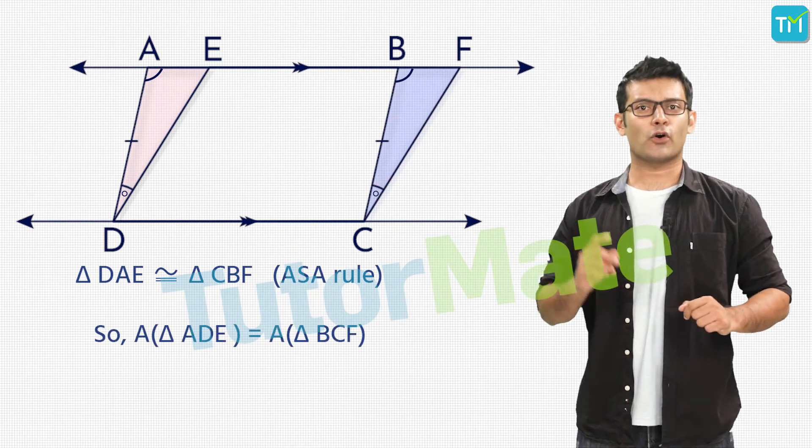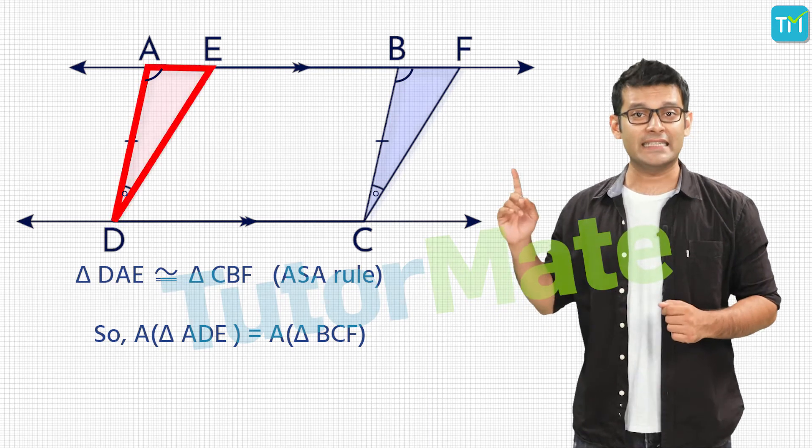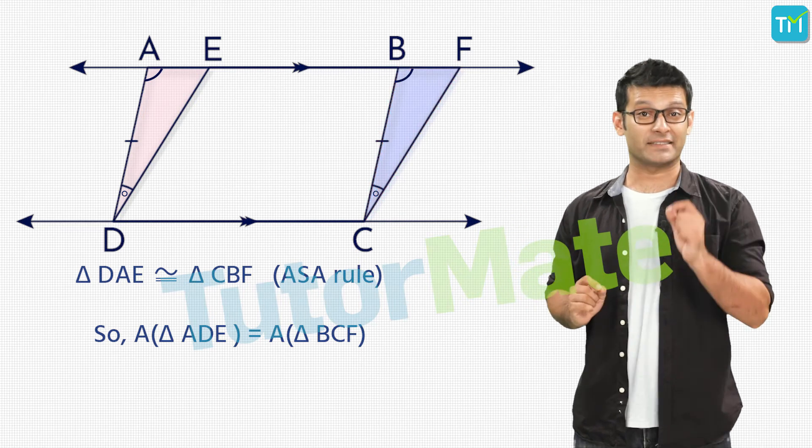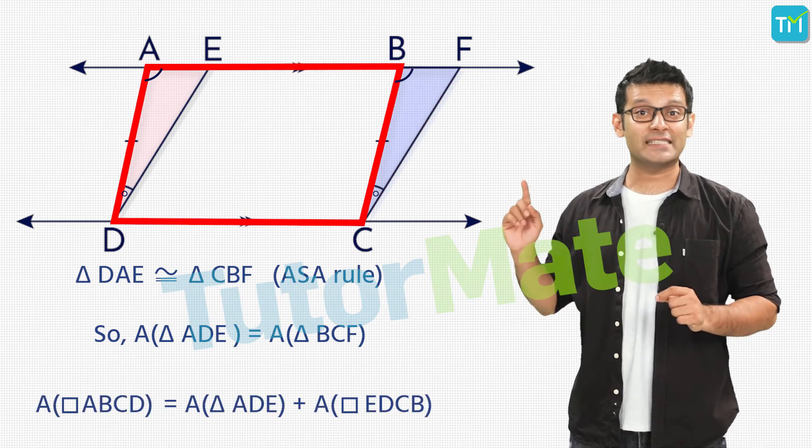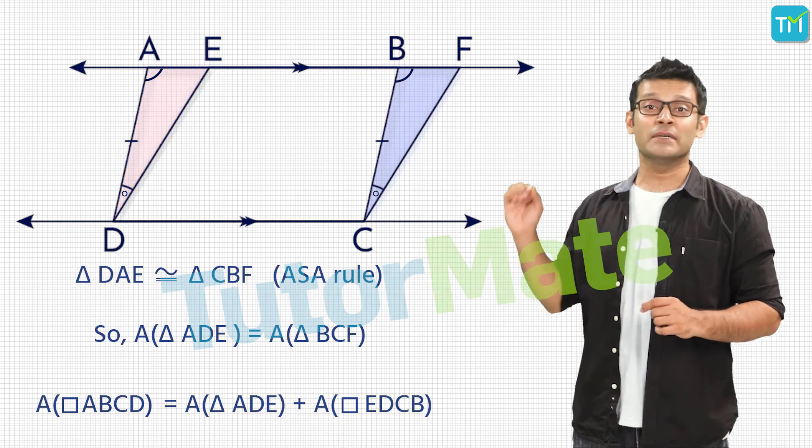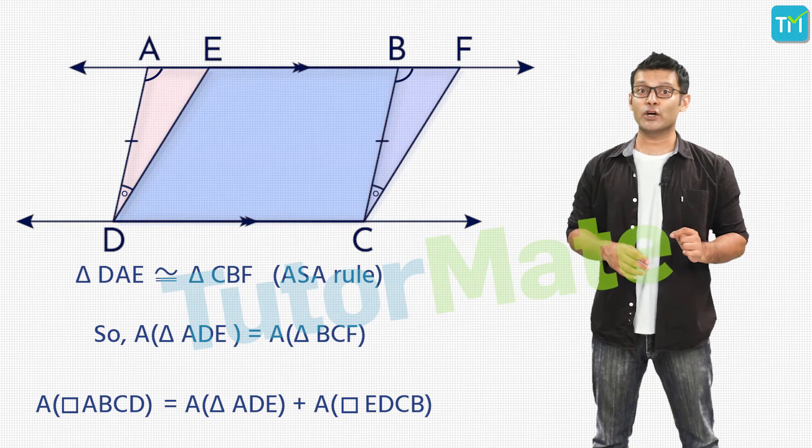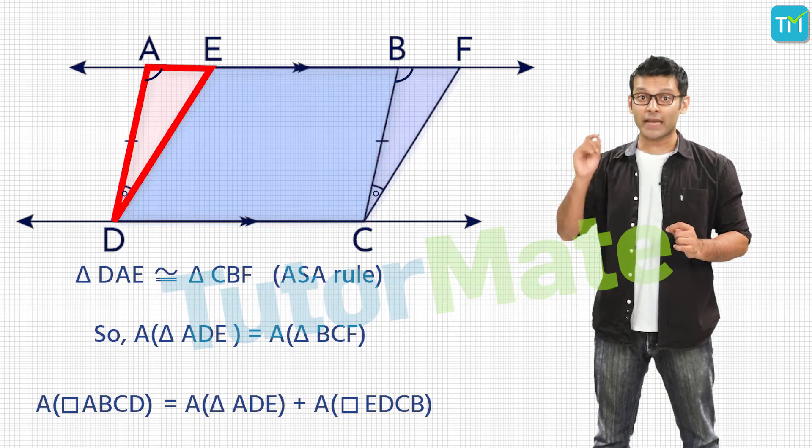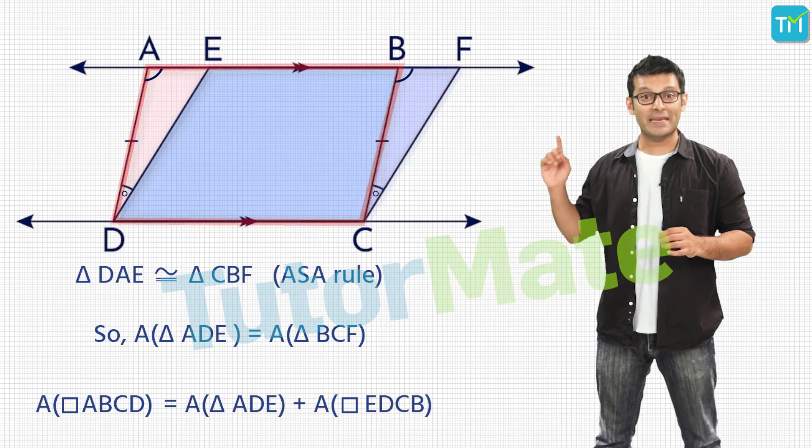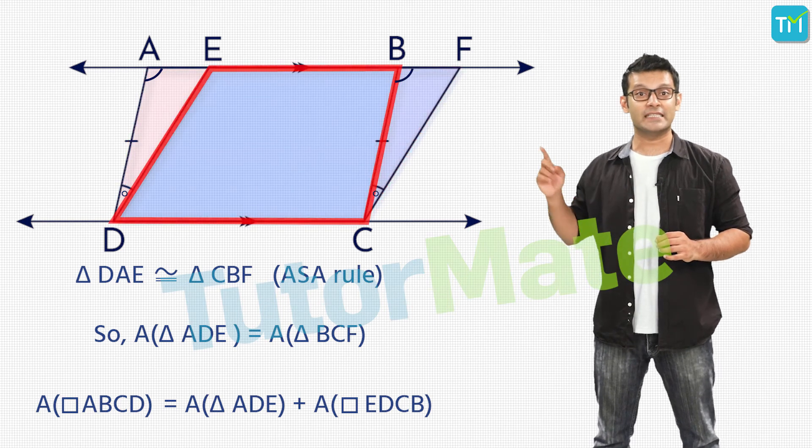We now know that the areas of the congruent triangles are equal. So area of triangle ADE is equal to the area of triangle BCF but the area of ABCD is the sum of the areas of triangle ADE and the trapezium EDCB. Here if we replace the area of triangle ADE by the area of triangle BCF, we have the area of ABCD is equal to the area of BCF plus area of EBCD.